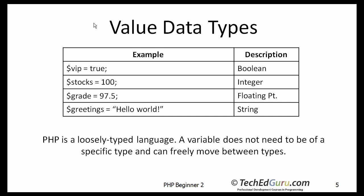A variable, on the one hand, represents data that changes or can change — its value varies within the program. A constant, on the other hand, represents data that stays the same throughout your program. When you assign a value to a variable or a constant, it is of a specific type. PHP is a loosely typed language. Unlike Java or C-Sharp, a variable does not need to be of a specific type and can freely move between types. But you still need to know your data types in order to be able to work with the language.